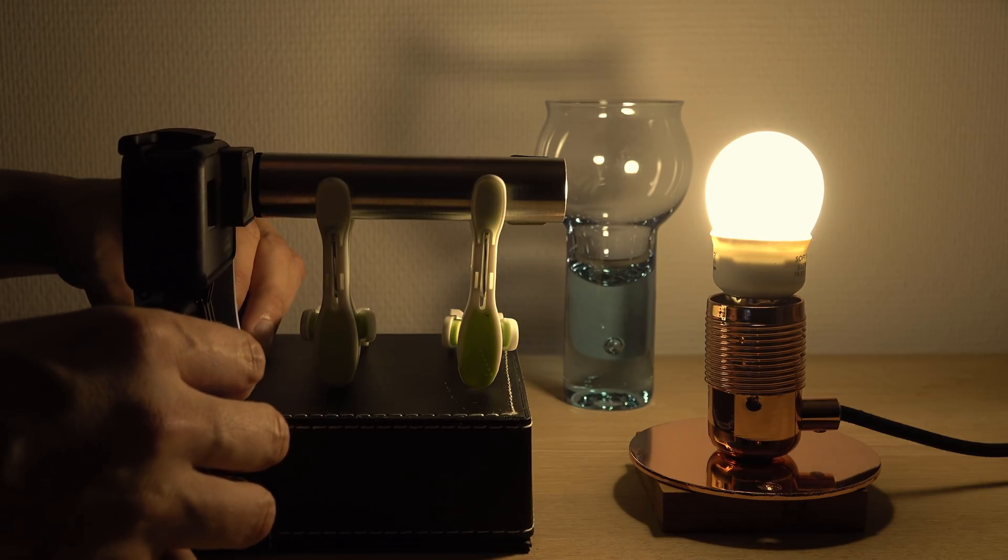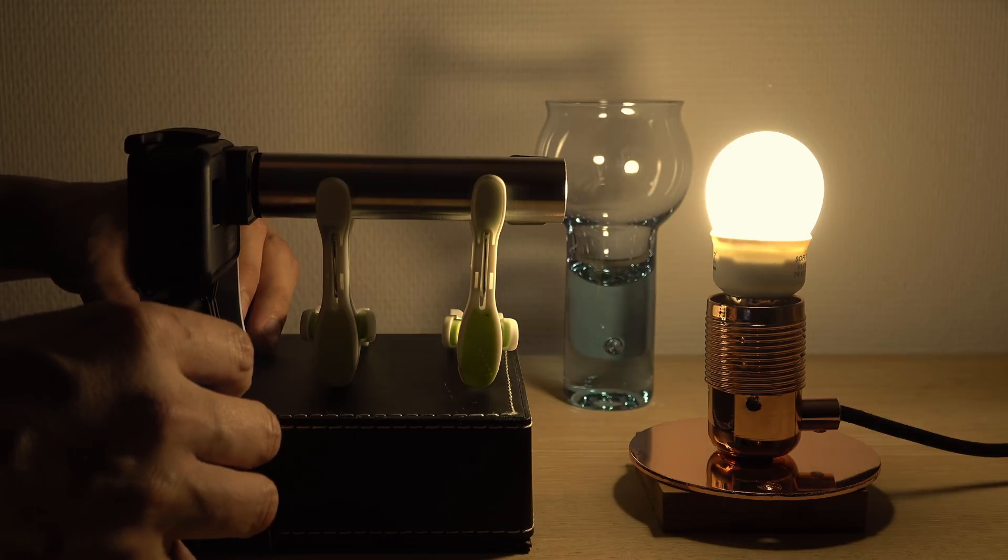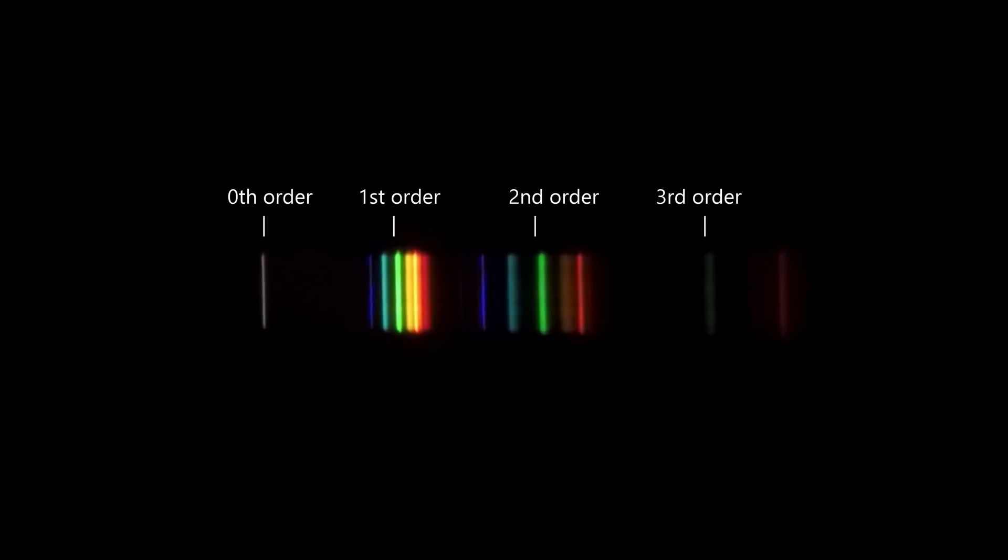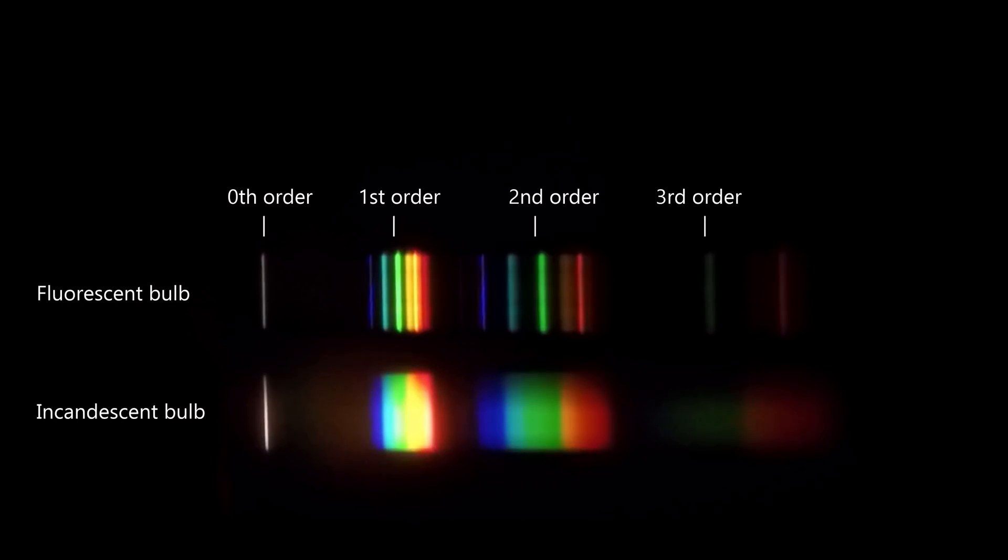If we switch to the fluorescent bulb it's a completely different spectrum. It's not a full spectrum from violet to red but a few distinct wavelengths. When mixed together these appear white to us but this bulb is clearly missing a lot of wavelengths. Colors.